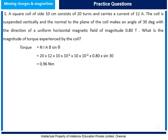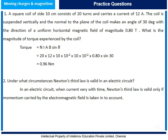Question 2: Under what circumstances is Newton's third law valid in an electrical circuit? The answer is: in an electrical circuit, when current varies with time, Newton's third law is valid only if the momentum carried by the electromagnetic field is taken into account.